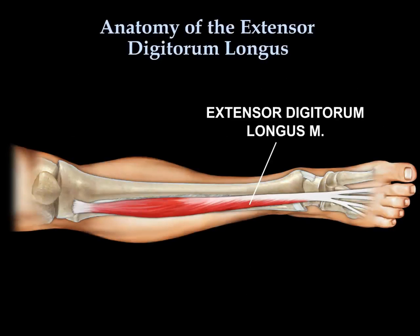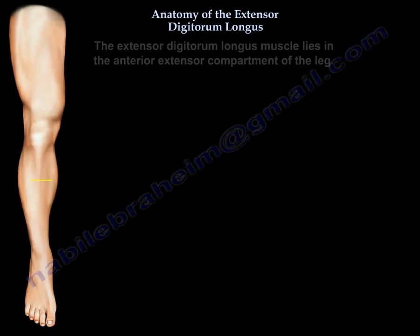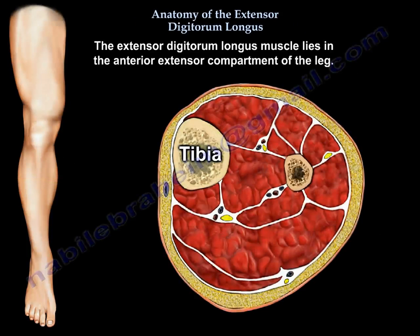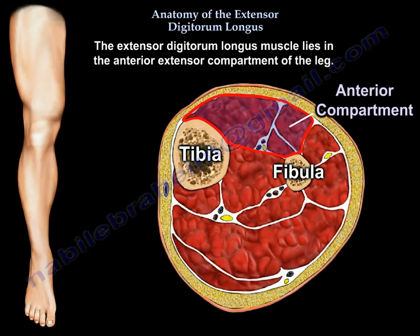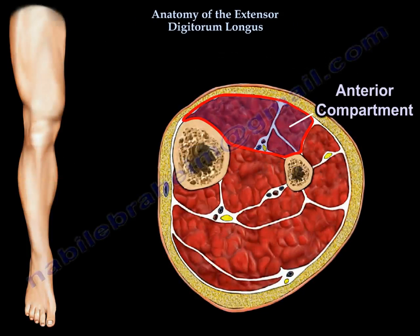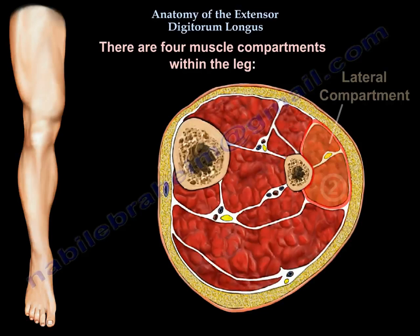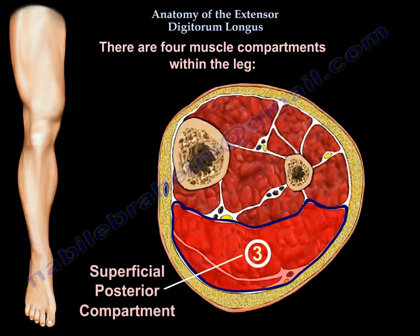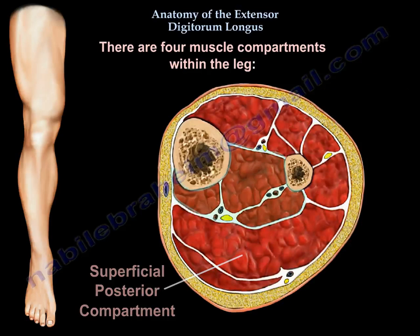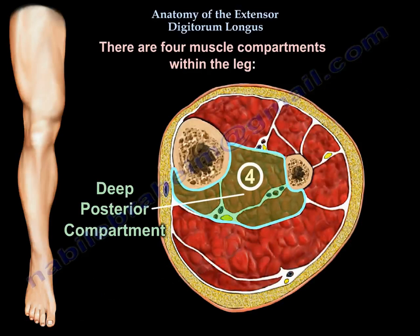The extensor digitorum longus lies in the anterior extensor compartment of the leg. There are four muscle compartments in the leg: the anterior compartment, the lateral compartment, the superficial posterior compartment, and the deep posterior compartment.